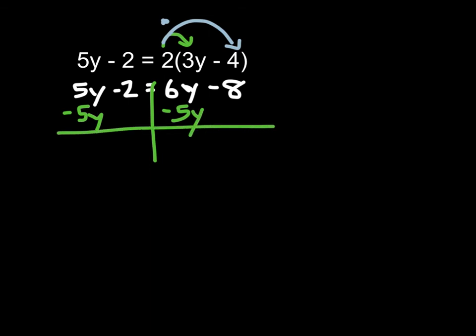When I do so, I have negative 2, being careful for that negative sign. Negative 2 equals 6y minus 5y is 1y. You could have just written a y minus 8.